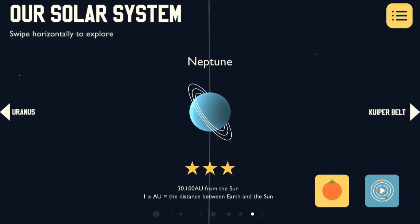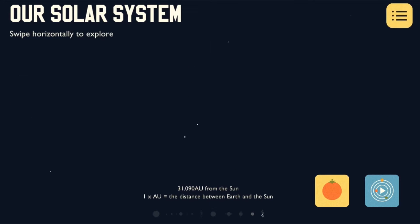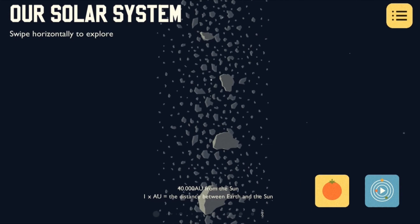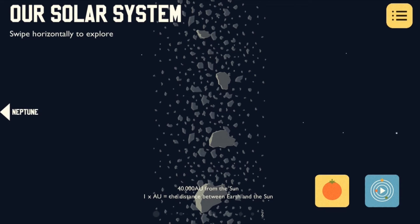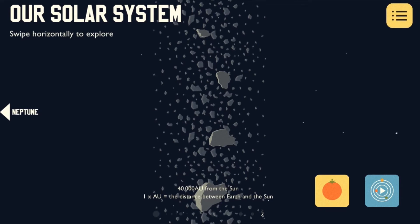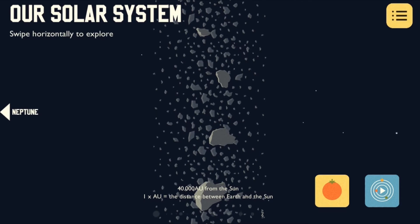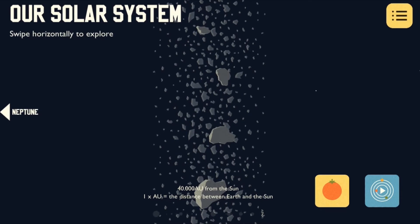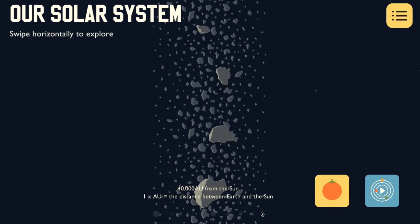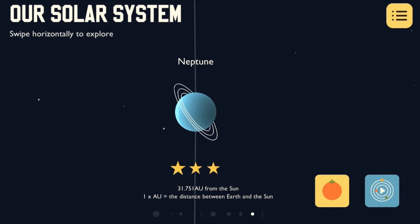If you were to travel out beyond Neptune you'd arrive at the Kuiper belt, which can be seen at the edge of the solar system. If you were to travel even further than that you'd reach the Oort cloud, but let's keep things a bit closer for today.